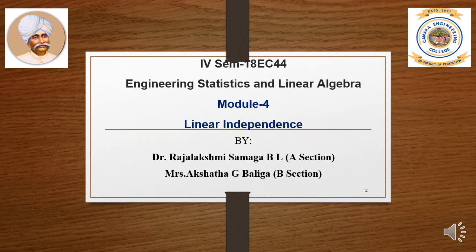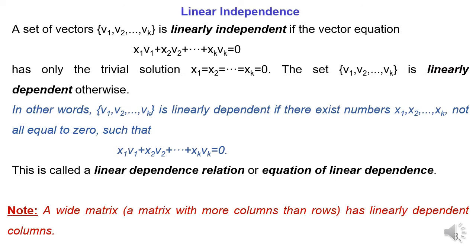Hello everyone. In this video, let us study the topic of linear dependence in case of vectors. If we consider a set of vectors v1, v2 up to vj, we can call this set as linearly independent provided the equation has a trivial solution. A trivial solution means this equation can be made 0 only by making the variables x1, x2 up to xj equal to 0. If it becomes 0 by some other means, then it is called linearly dependent.